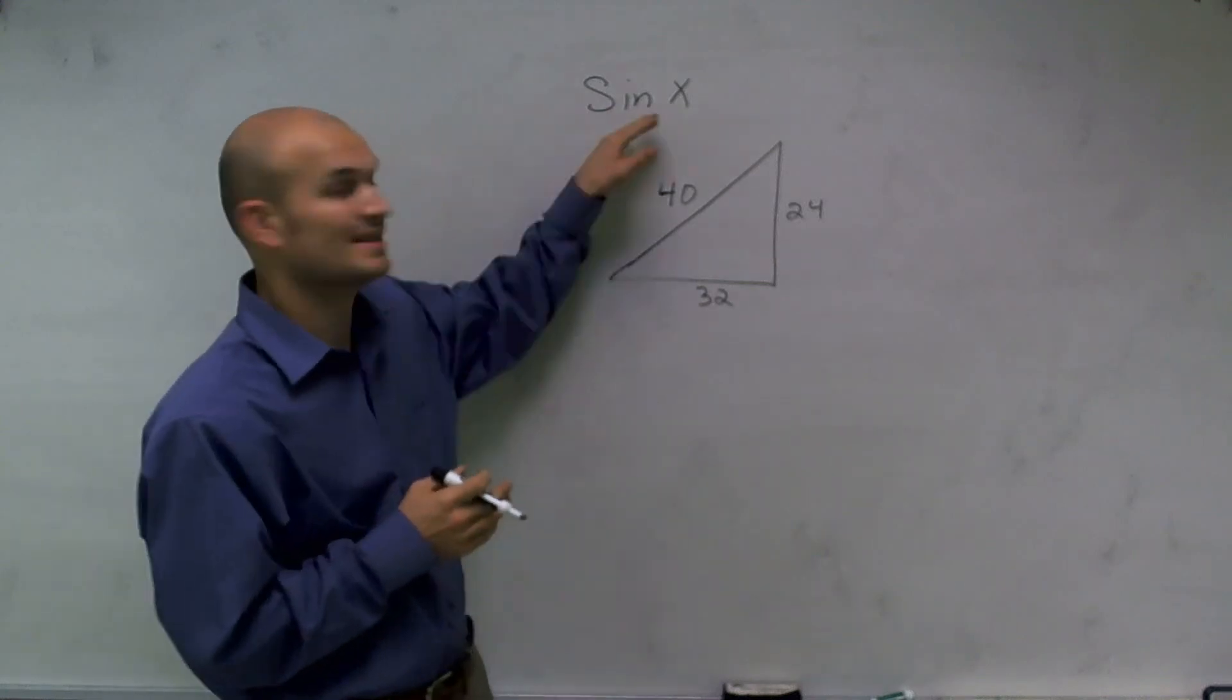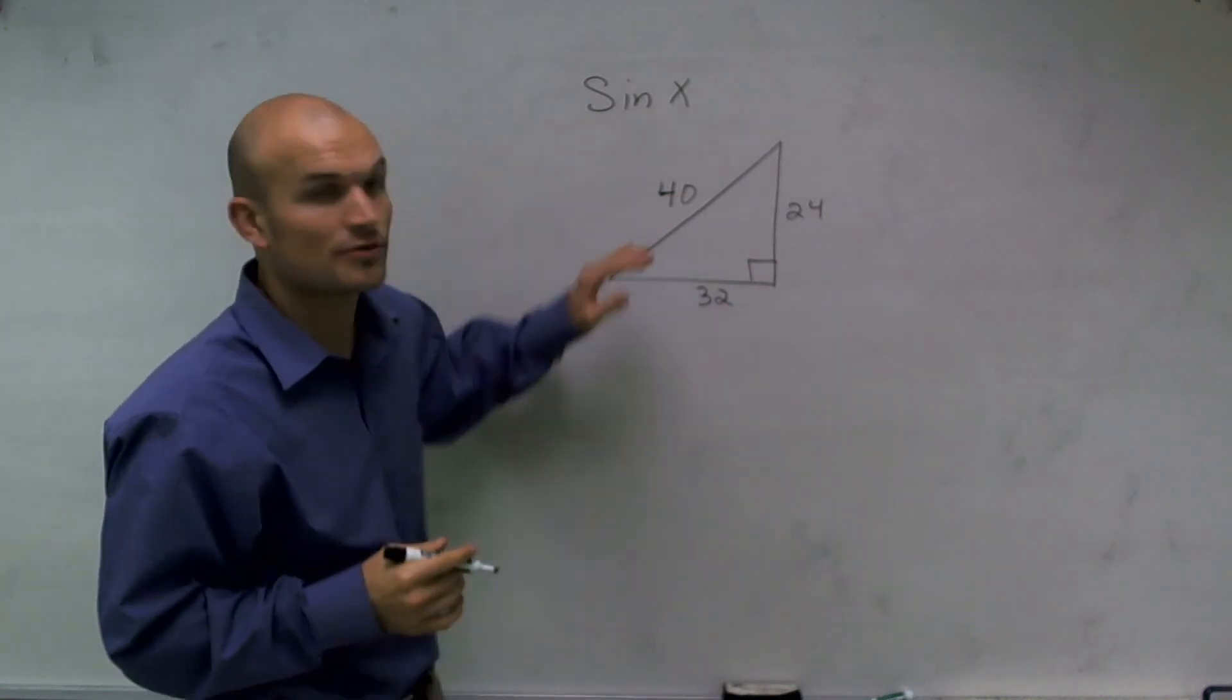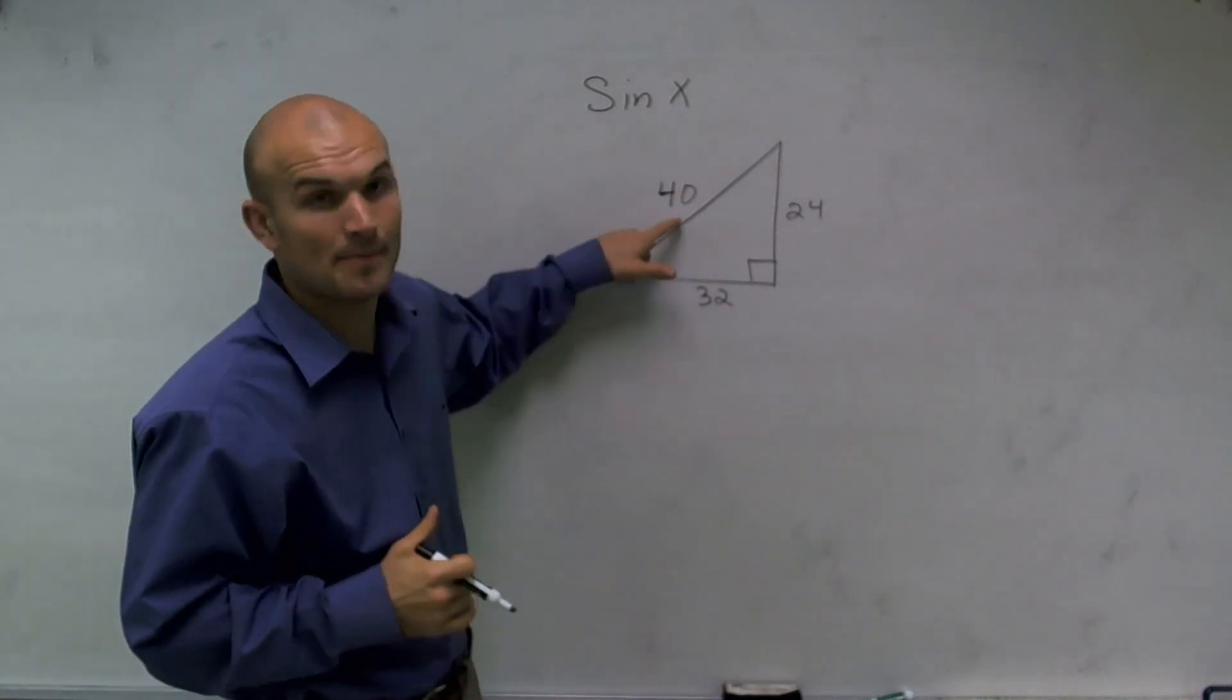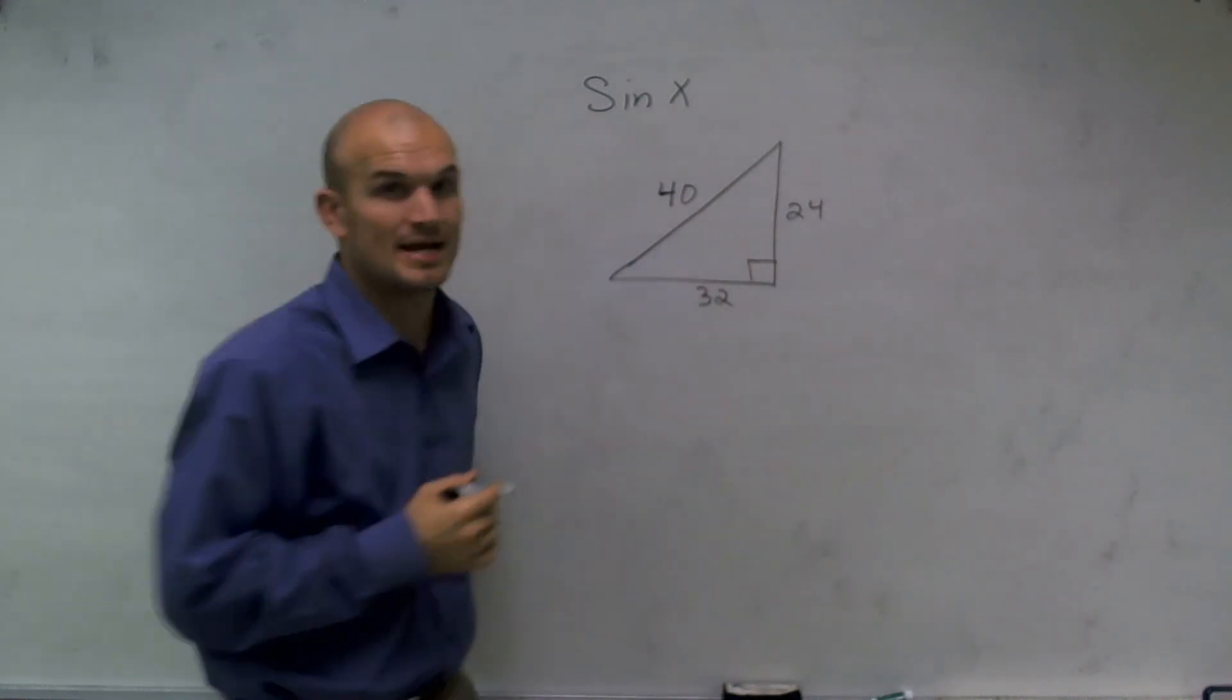Welcome, everybody. What I want to do is show you how to find the sine of x when given a right triangle. We have our three lengths of our triangle. The hypotenuse is 40. The reason I know it's the hypotenuse is because it's directly opposite of my 90-degree angle.